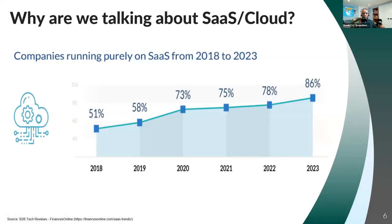Why are we talking about cloud technologies in the first place? A study from B2B Tech Reviews shows that in 2018, 51% of organizations were running purely on SaaS, and expectations are that it will continue to grow through 2023 to upwards of 86% running purely on SaaS or cloud solutions. We're not slowing down anytime soon.